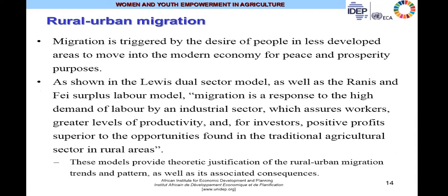Migration is triggered by the desire of people in less developed areas to move into the modern economy for peace and prosperity. As seen in Lewis's dual sector model and Fay-Renis's supply labour model, migration could be a response to high demand for labour by an industrial sector that assures workers greater productivity and investors positive profits, superior to the opportunities found in the traditional agricultural sector. Economic development models therefore provide some theoretical justification for rural-urban migration trends and their associated consequences.